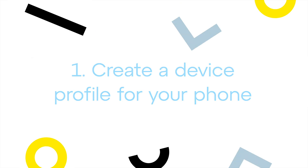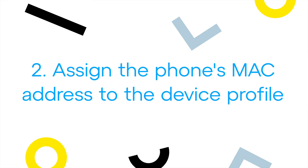Before you can provision your phone, you must do five things. First, create a device profile for your phone in the admin portal. Second, verify that you have assigned the phone's MAC address to the device profile. The MAC address is a unique, 12-digit identification code typically found on the back of the device.